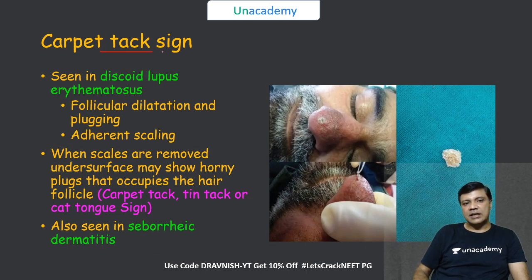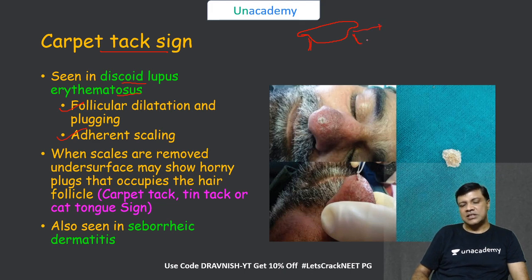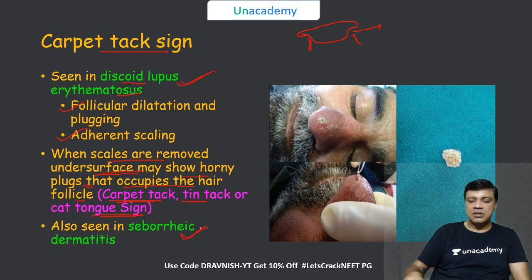The carpet tack sign is a feature of discoid lupus erythematosus. In DLE, follicular dilatation, plugging and adherent scaling occur. The hair follicles are dilated with adherent plugs occupying them. When the scales are removed, the underside shows horny plugs occupying the hair follicle. This is called the carpet tack sign, tin tack sign, or cat tongue sign. It can also be seen in seborrheic dermatitis.